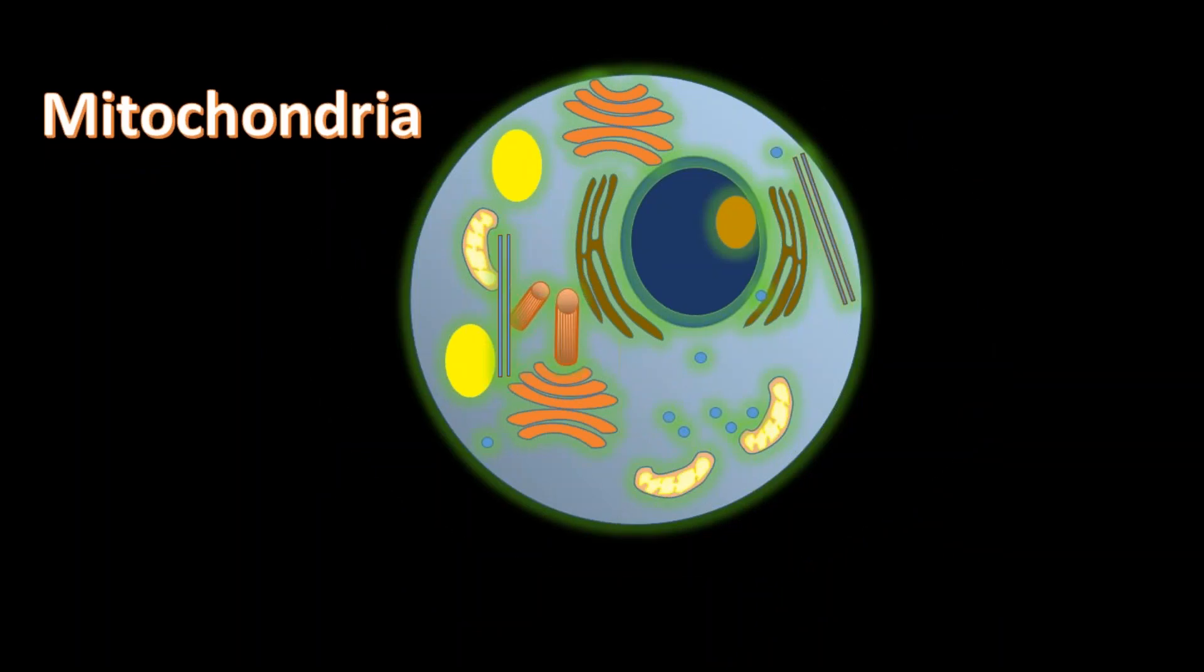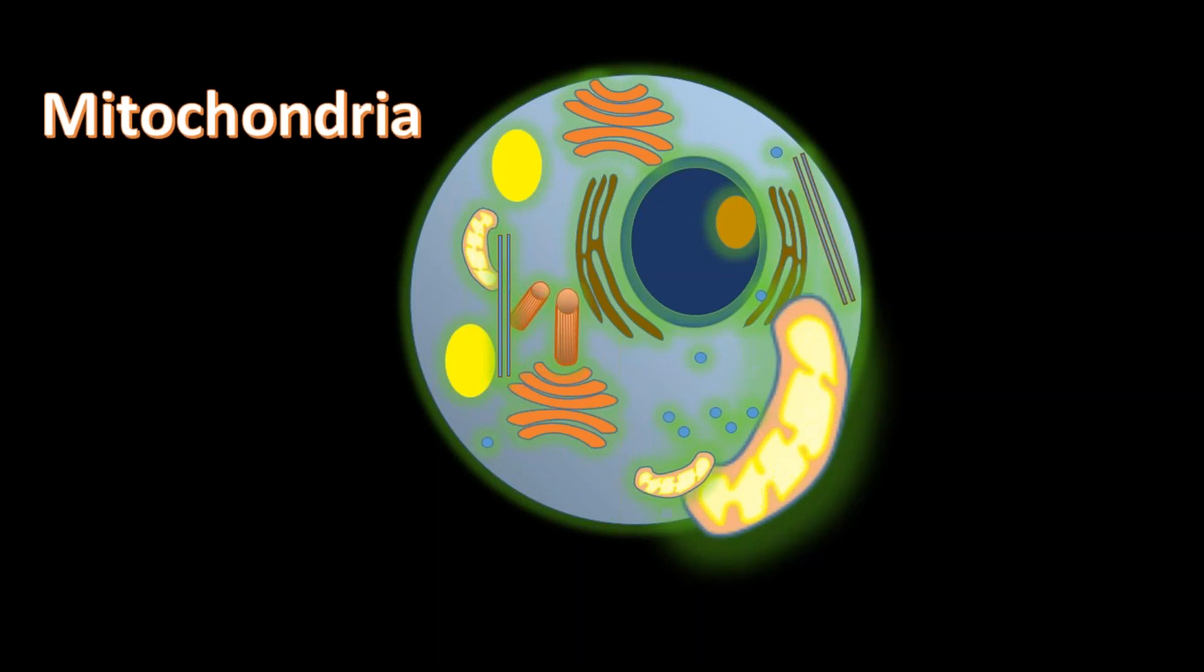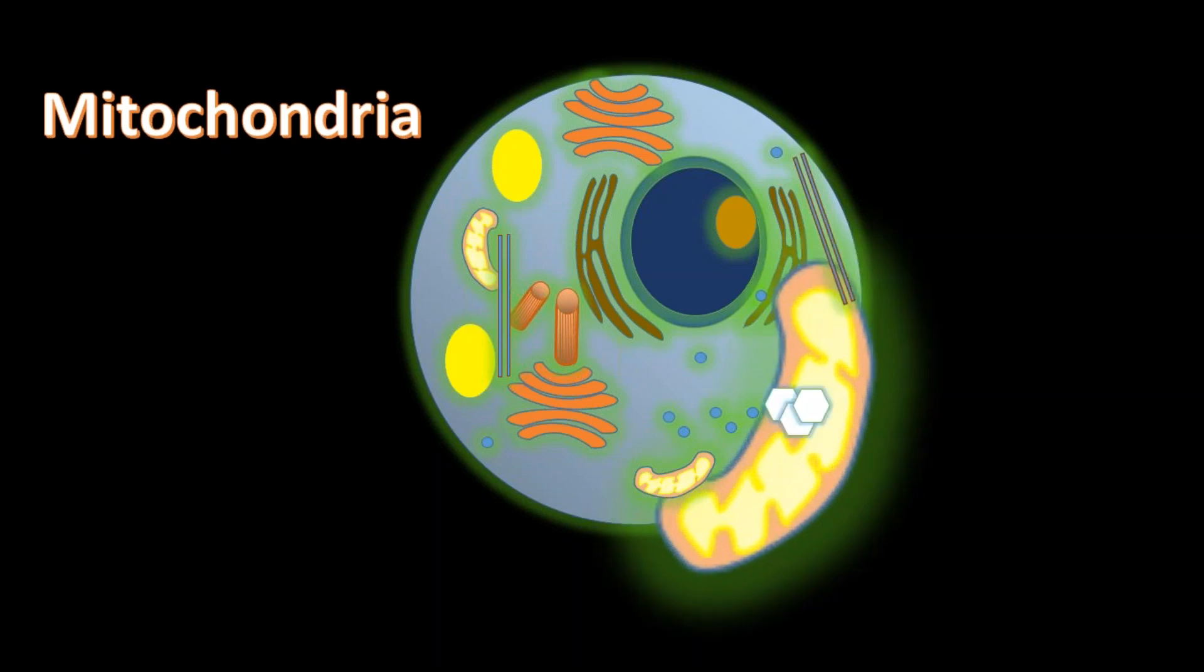Let's see mitochondria, also known as the powerhouse of the cell. Mitochondria takes up sugar and prepares ATP, adenosine triphosphate, the energy currency of the cell. The cell needs ATP in order to perform its functions.